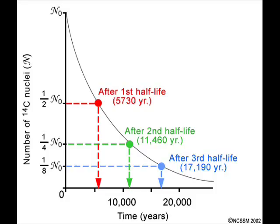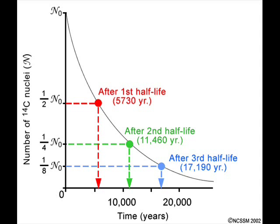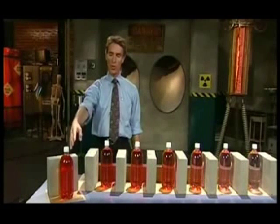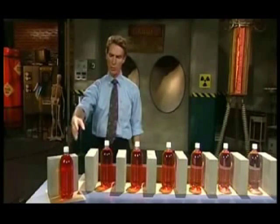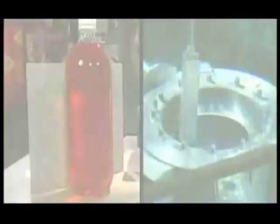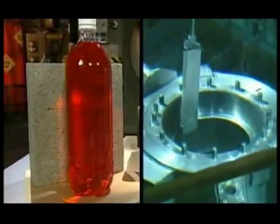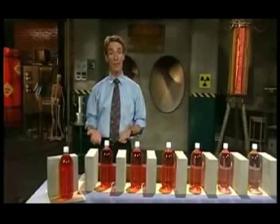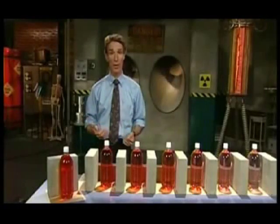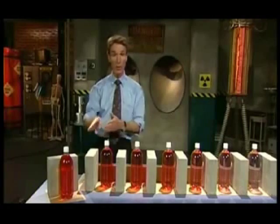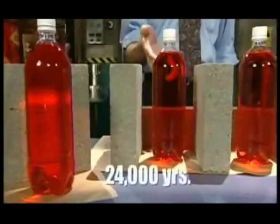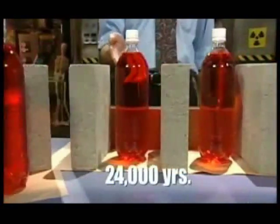Plutonium, for example, has a half-life of about 24,000 years. So let's say this red water is the plutonium in a spent nuclear fuel rod, fresh from the reactor. After one half-life — 24,000 years — diluting this water by half, it looks like this.